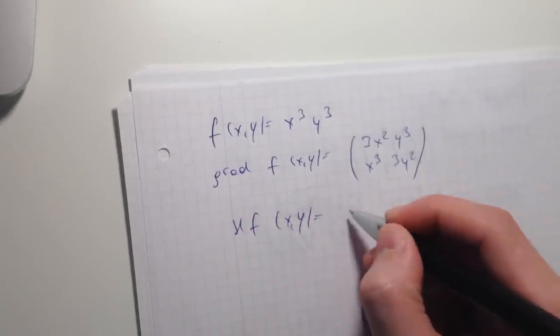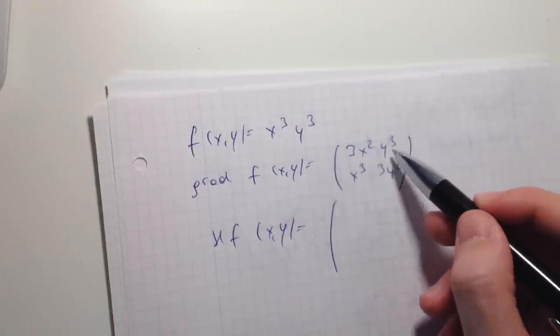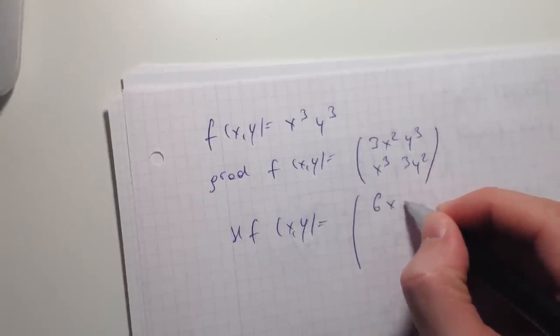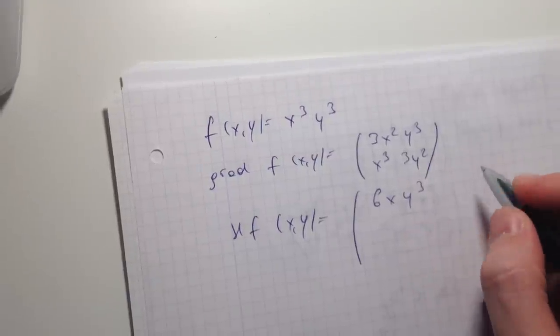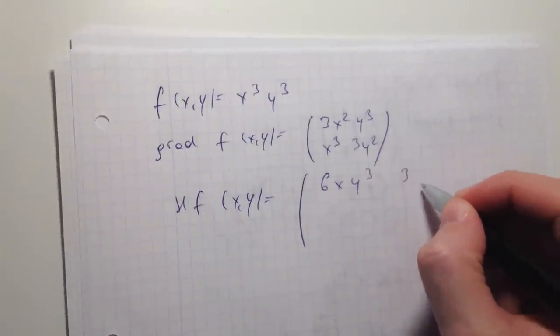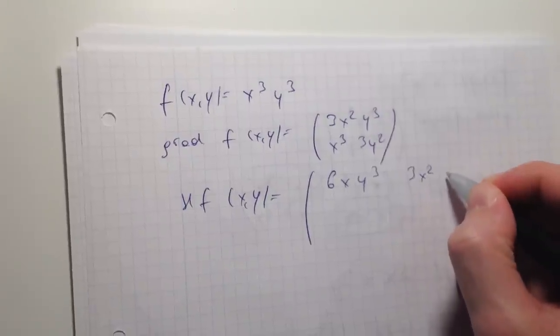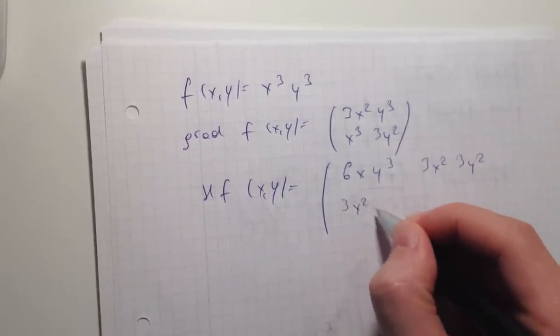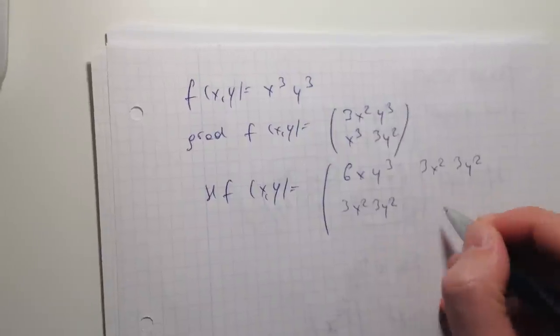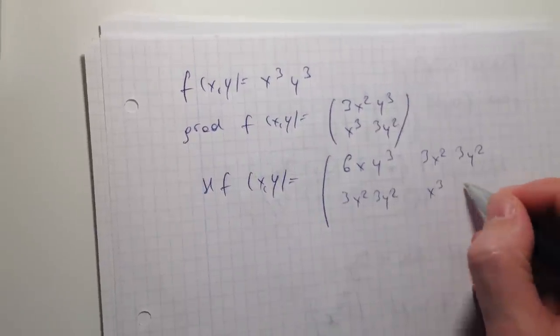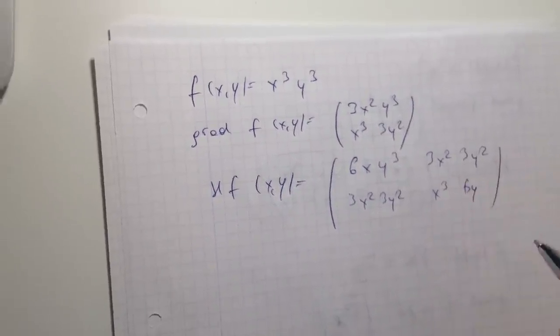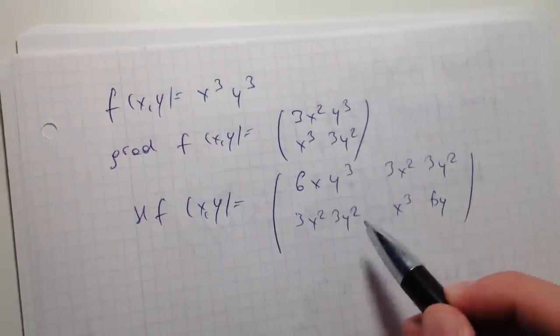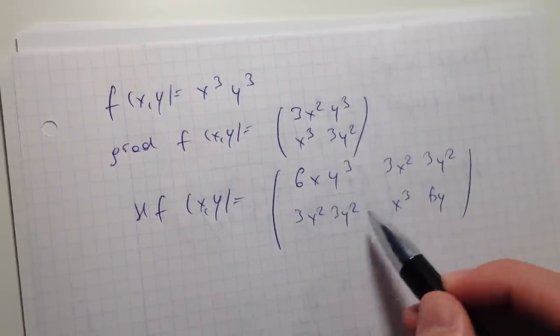For the Hessian matrix, you have to derive first x and then y. So if you derive first x, it's going to be 6x, y to the power 3, and 3x to the power 2, 3y to the power 2. The same for this: 3x to the power 2, 3y to the power 2, x to the power 3, 6y. And the Hessian matrix, if you see these two variables are the same.